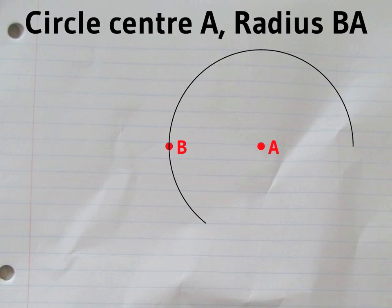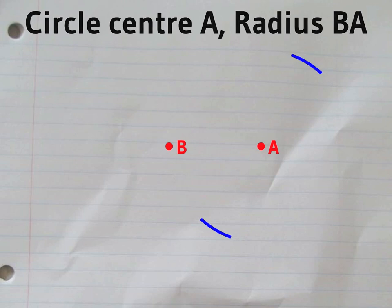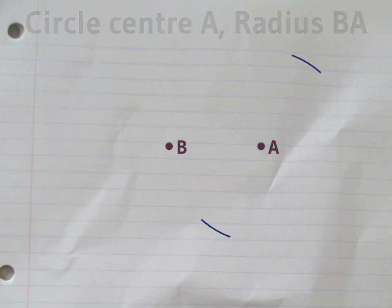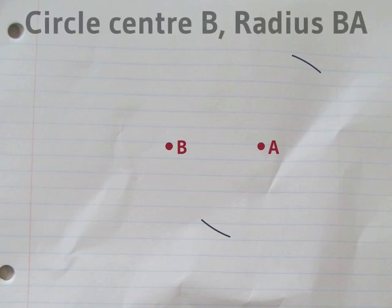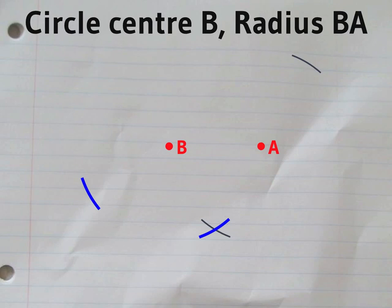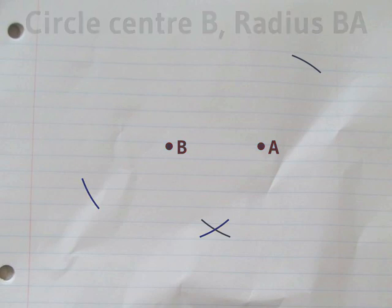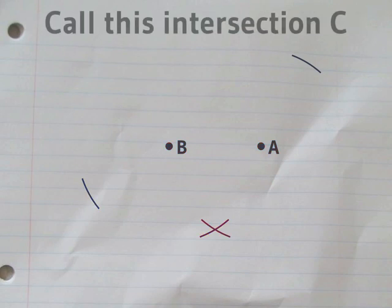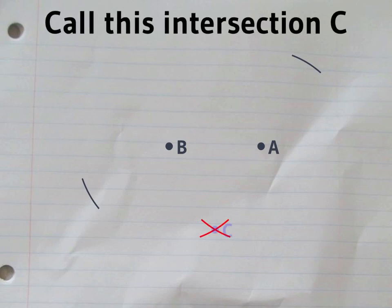The first step is to draw a circle centered on A with radius AB. And we'll need a circle with the same radius centered on B. Let's call this point where these circles meet C.